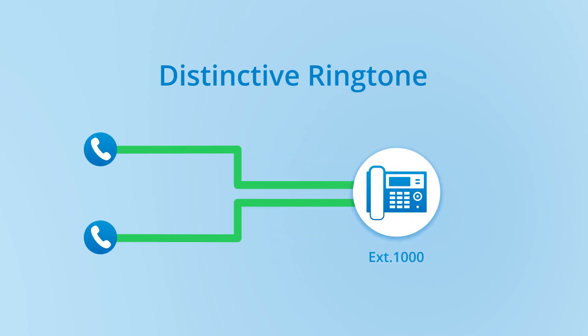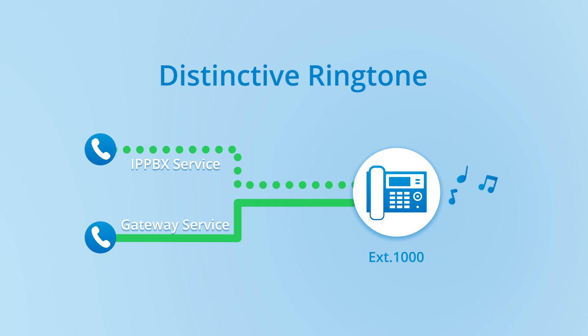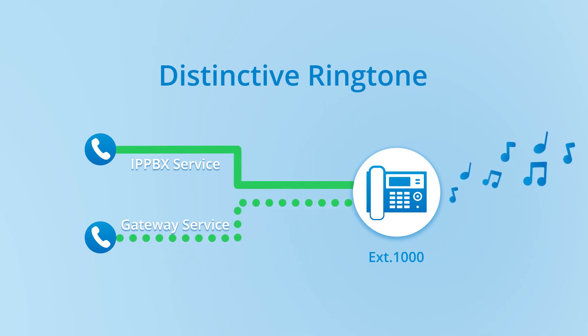Take this scenario as an example. The user's extension 1000 is supposed to deal with incoming calls from two inbound routes — one for IP PBX service and the other for gateway service. We're going to set up two ringtones to help the user to tell these two routes apart.